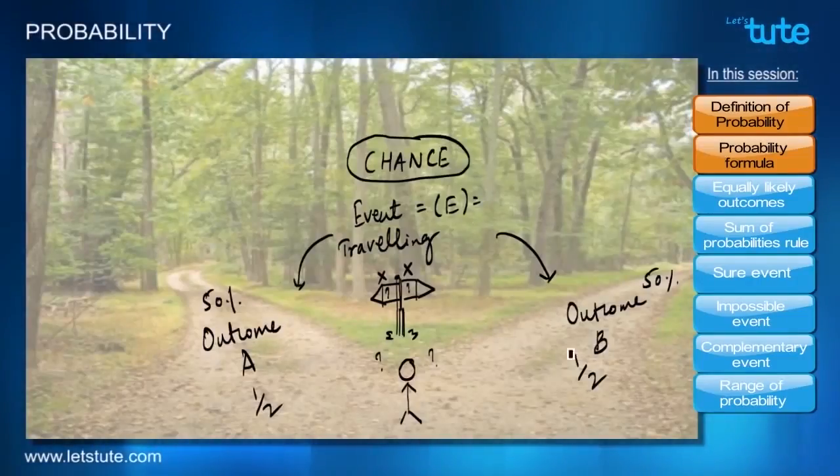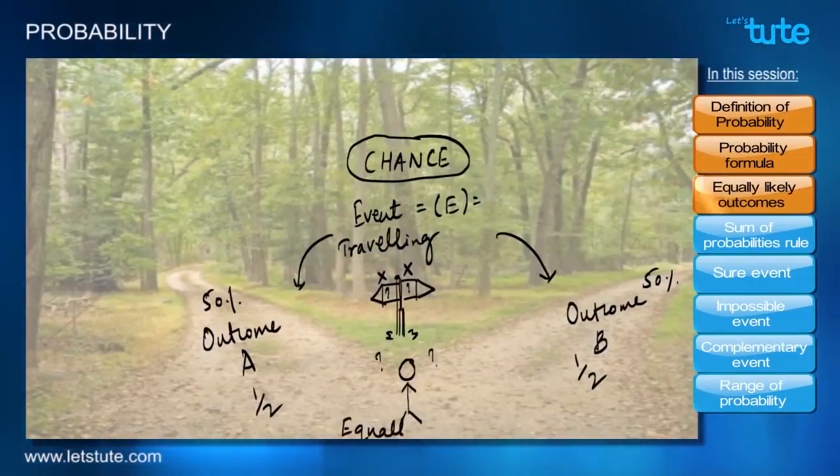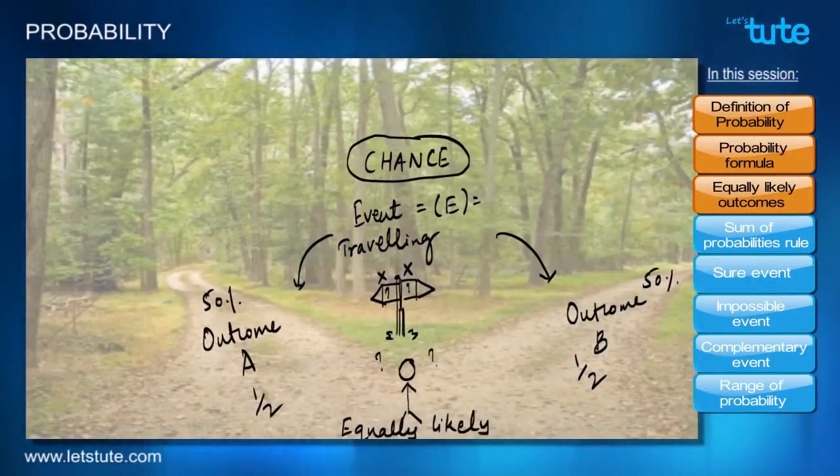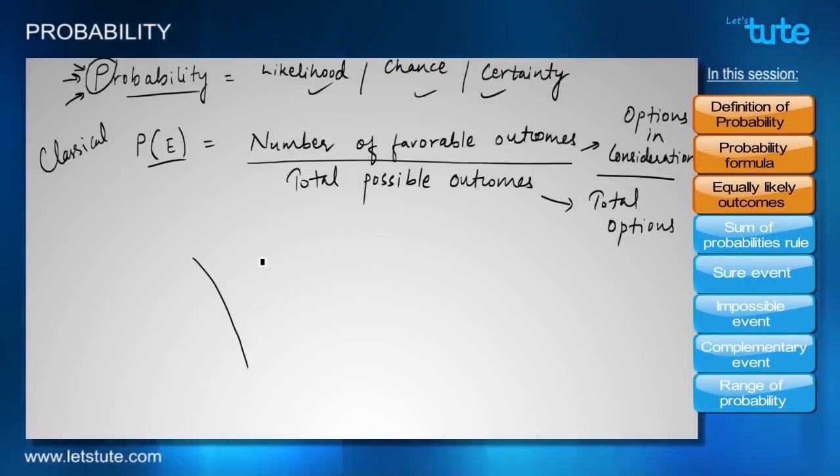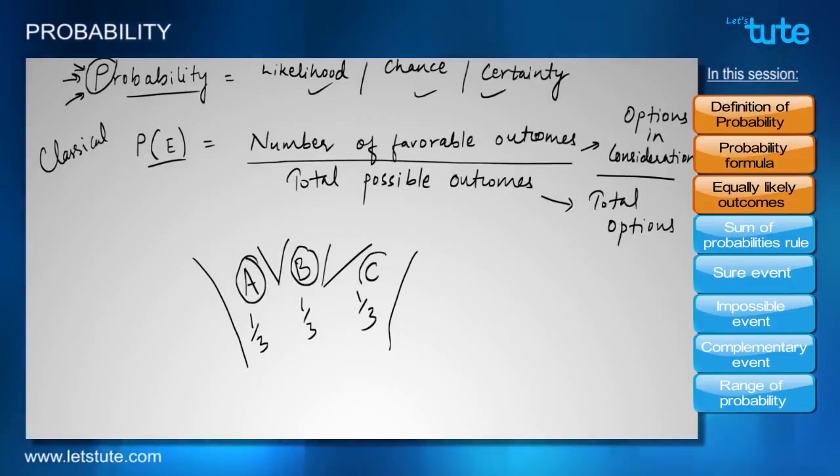But what about in case of three roads? Let's say there is a third road C. Then the probability will be 1 by 3 because there are three options in front of us: A, B, and C. There is only one way I can choose either of the three roads, so that's why the probability is 1 by 3. If we further go on adding these probabilities, we'll get 3 by 3, that is equal to 1.